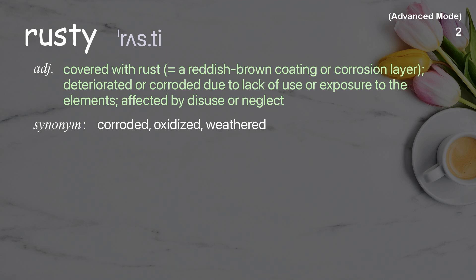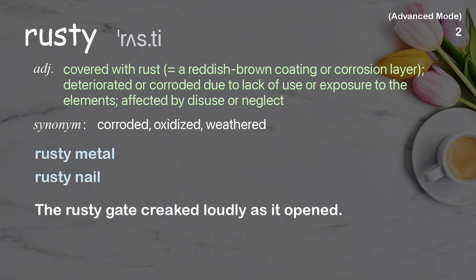Rusty: covered with rust — a reddish-brown coating or corrosion layer; deteriorated or corroded due to lack of use or exposure to the elements; affected by disuse or neglect. Examples: rusty metal, rusty nail. The rusty gate creaked loudly as it opened.